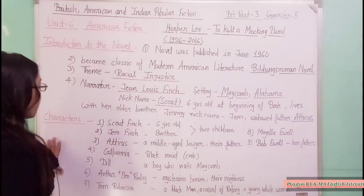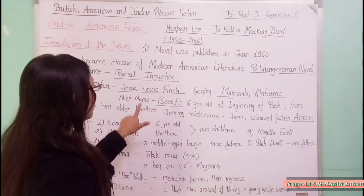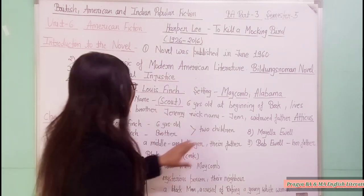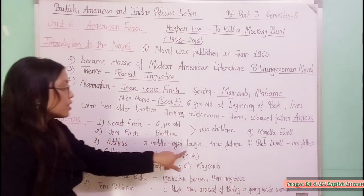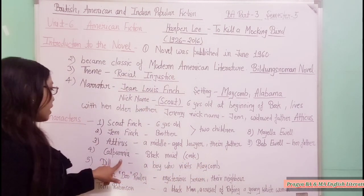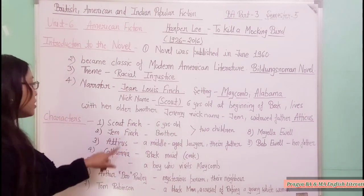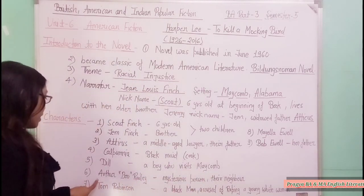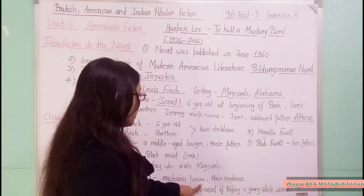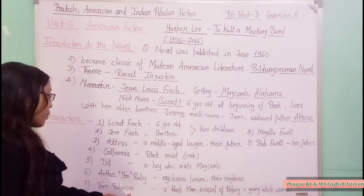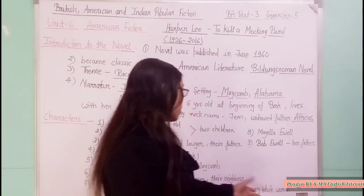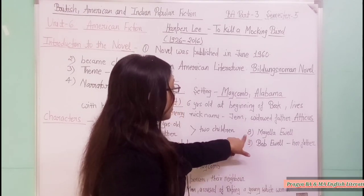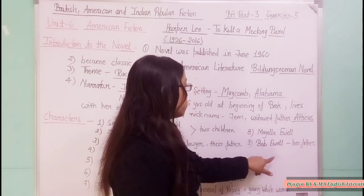The main characters are: Scout Finch, the narrator, who is six years old; Jem Finch, her older brother; and Atticus Finch, their father, who is a middle-aged lawyer. Calpurnia is a Black maid and cook who lives with them. Dill is a boy who visits Maycomb. Arthur 'Boo' Radley is a mysterious neighbor. Tom Robinson is a Black man accused of raping a young white woman named Mayella Ewell, and Bob Ewell is her father.